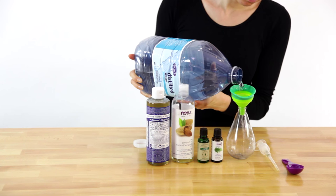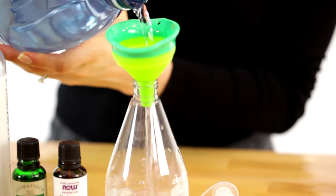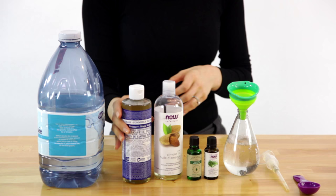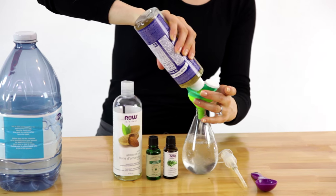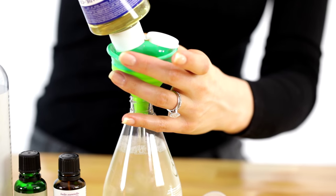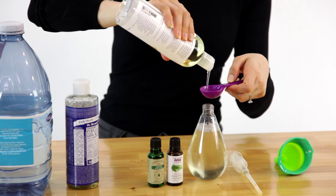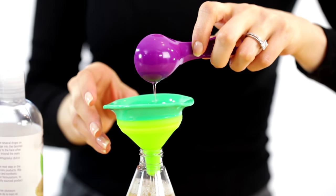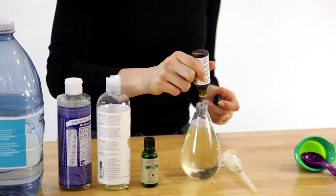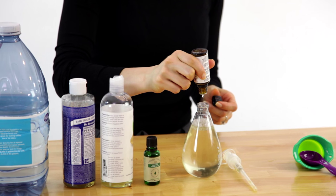Add half a cup of distilled water and half a cup of castile soap, along with one tablespoon of almond oil, which is great for moisturizing, and 20 drops of your favorite essential oils, which will help the soap smell delightful.